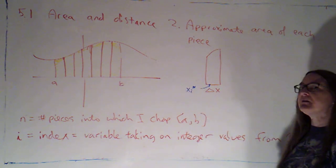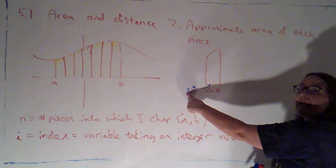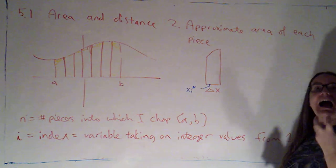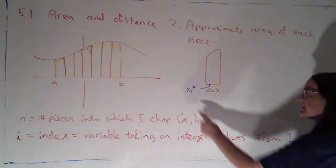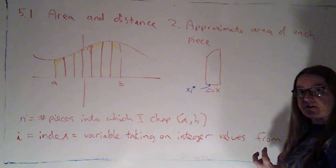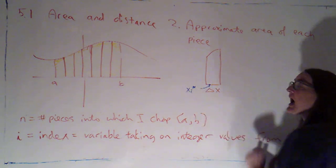Now, I'm going to call that point x i star. Now, here's the logic behind that notation. x, because it's an x value. i, because I'm viewing this as the i-th piece. Okay? So, if this was the second piece, this would be x 2 star. If this were the fifth piece, it would be x 5 star. This is a generic piece. It's the i-th piece. So, it's x i star.